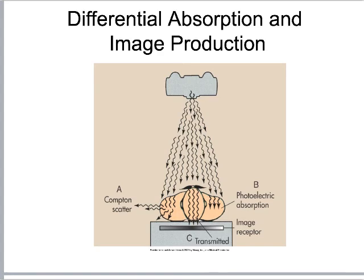In CT, the same setup applies — x-ray tube and image receptor — but they spin simultaneously around the patient. We're learning to walk before we run: this basic setup is the foundation for CT. The only change is that everything moves dynamically while taking the picture. Photoelectric effect and Compton scatter still occur inside the patient, and we're trying to pick up the differential absorption pattern to guide diagnosis.